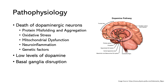The death of dopaminergic neurons leads to a progressive loss of dopamine in specific regions of the brain, such as the substantia nigra, and this disrupts the normal functioning of neural circuits involved in movement and other functions, leading to the characteristic symptoms. Dopamine helps to facilitate smooth, coordinated movements by transmitting signals from the substantia nigra to another region of the brain called the striatum.